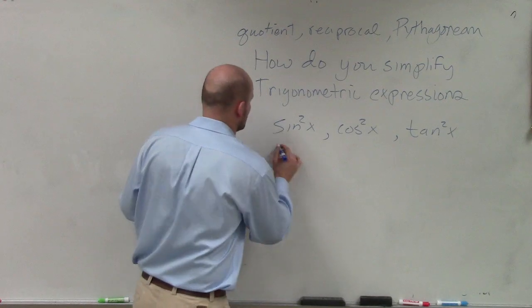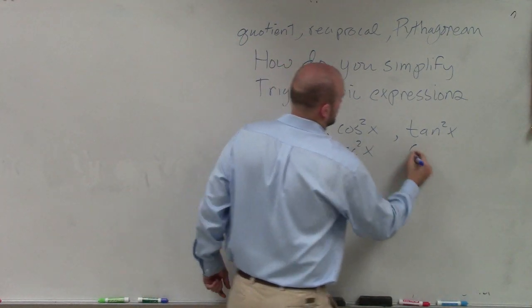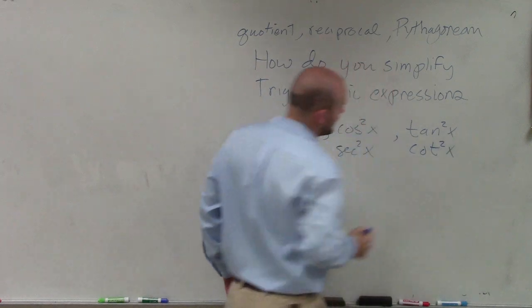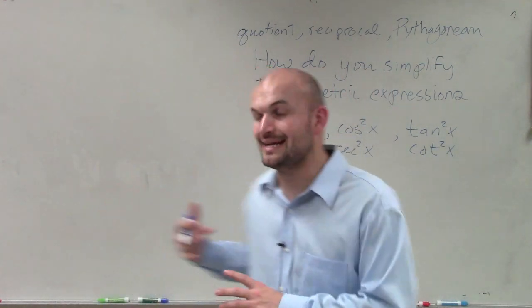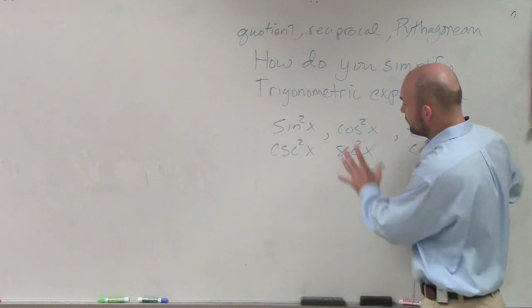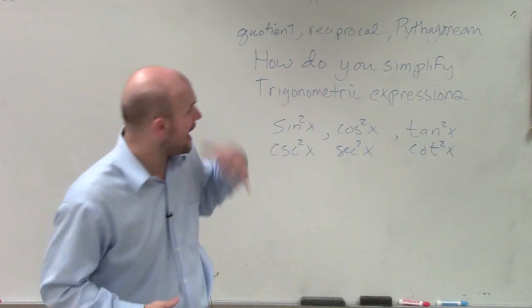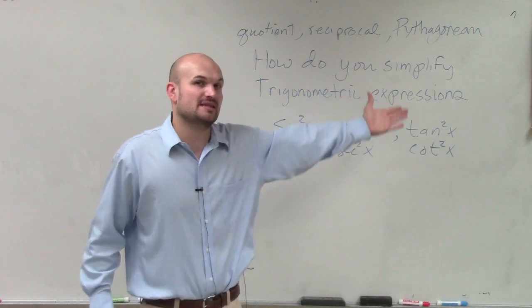When you see any one of these trigonometric terms, what I always think, or actually even their reciprocal identities, there's not a lot that we use with these true identities in when simplifying trigonometric expressions. So whenever I see any of these terms squared, I automatically think I'm going to try to replace it with a Pythagorean identity.